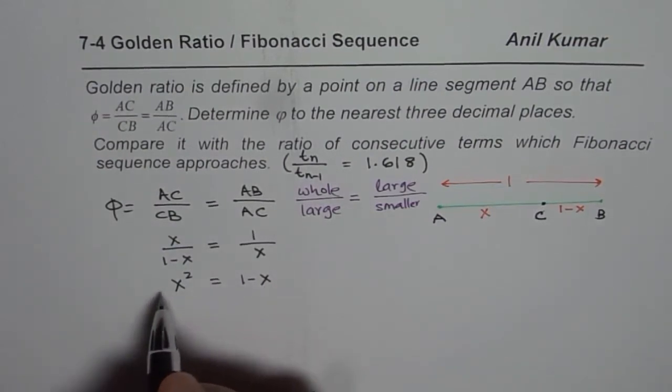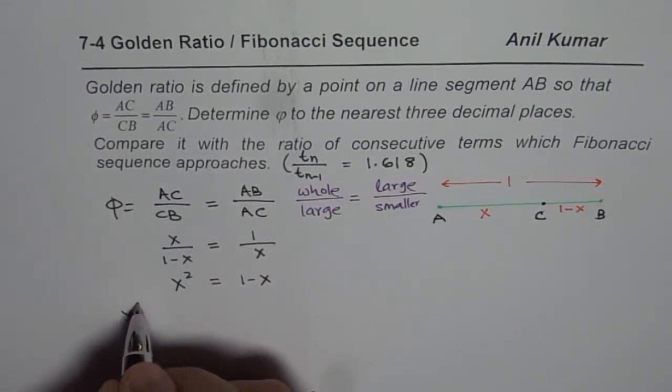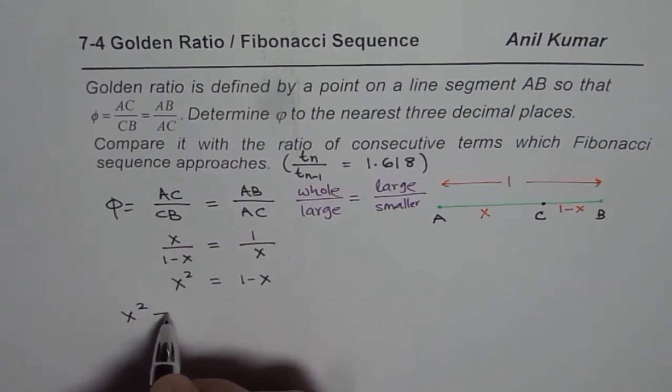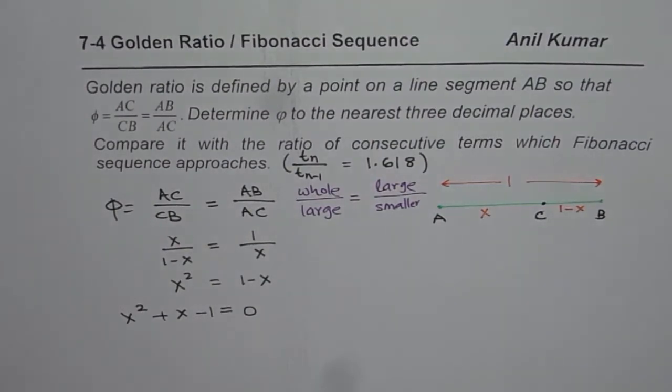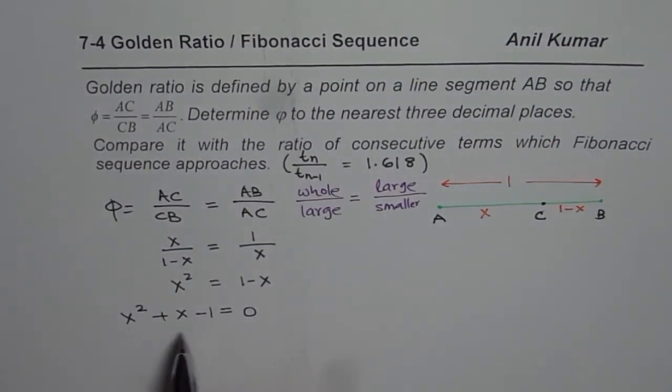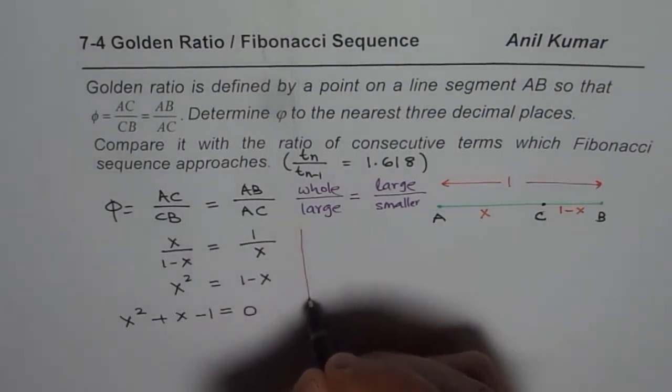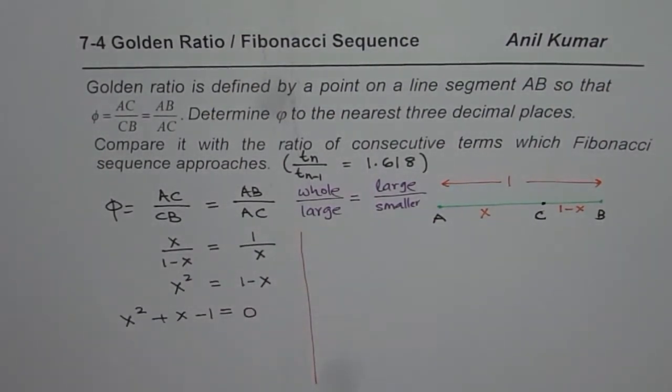So if I cross multiply, I get X squared equals to 1 minus X. We can bring all the terms to the left side. So we get quadratic equation, X squared plus X minus 1 equals to 0. Now, this quadratic equation can be solved using quadratic formula. So let us solve this equation using quadratic formula.